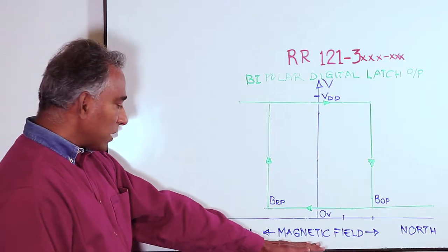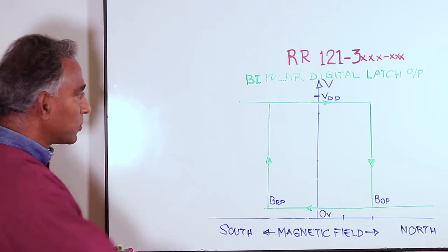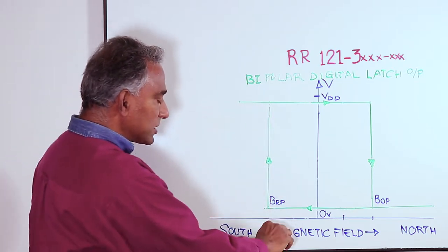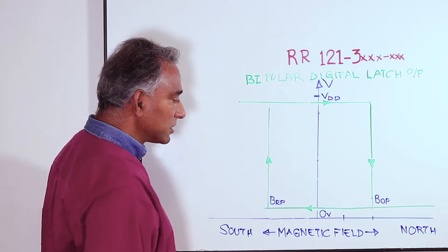Now as the magnet is taken away, or as the south pole of the magnet is taken away, we follow this line back in this direction, and when the south pole is far away, the magnetic field strength is zero,